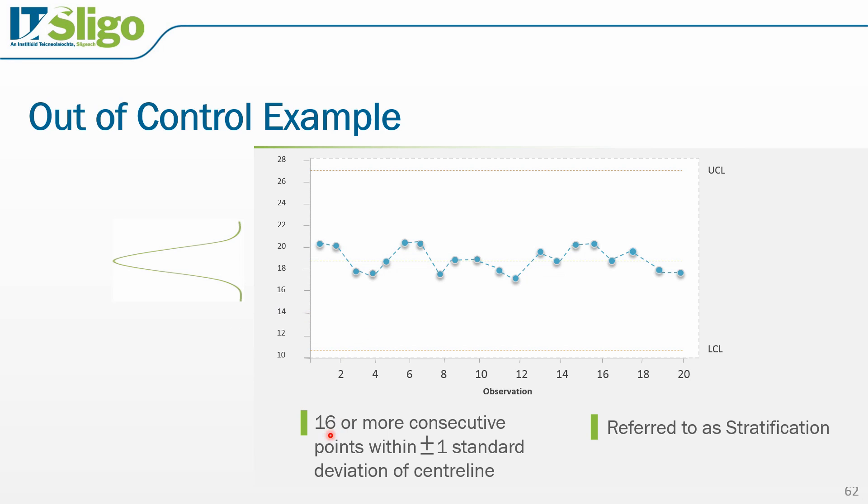When we get 16 or more consecutive points lying between plus and minus one standard deviation, we consider the process to be out of control because this is an extremely unlikely event based on the normal distribution. This is referred to as stratification. And again, it indicates that we need to investigate what might be happening in our process.